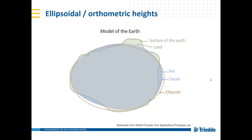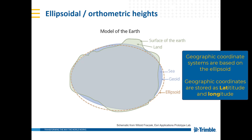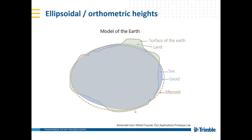Hello and a very short introduction into ellipsoidal and orthometric heights. We have in general an ellipsoid, a definition of our world, very generalized, typically shown as a dashed line, approximately representing our earth.